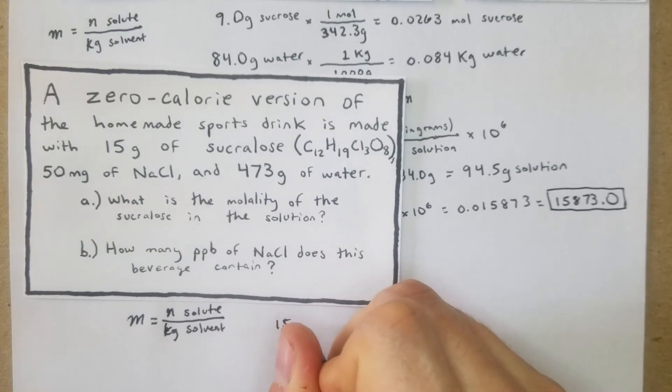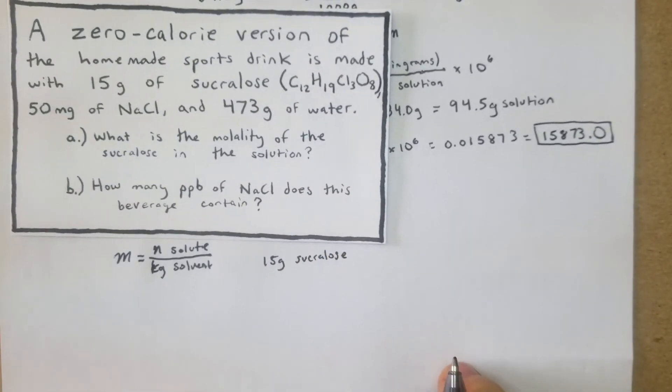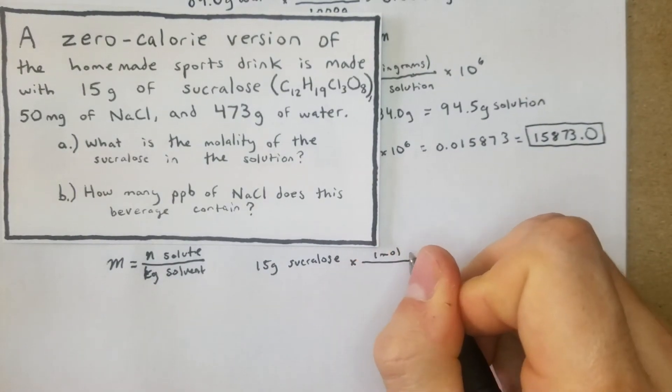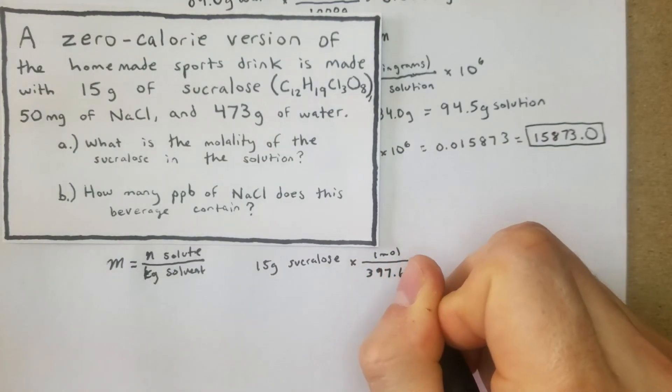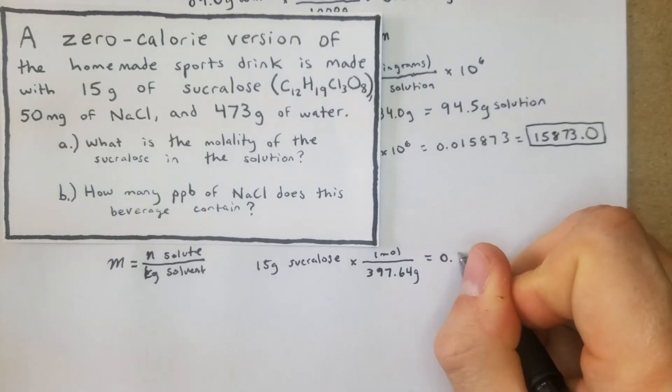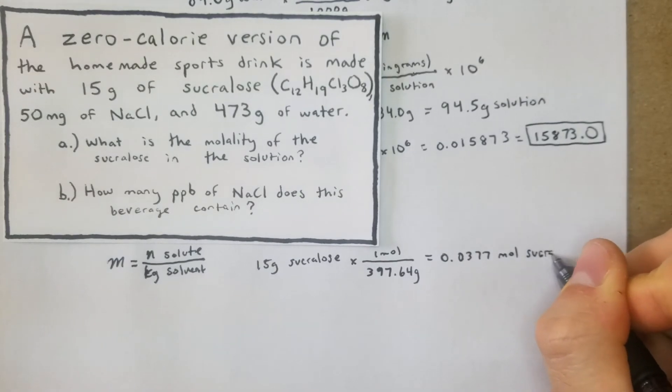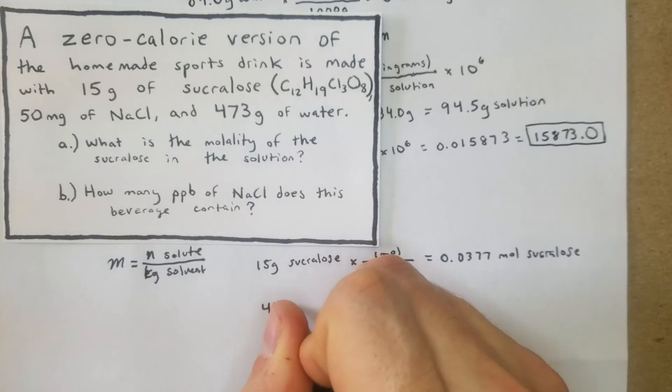We start with our formula: n of solute over kg of solvent. We have 15 grams of sucralose times one mole divided by its molar mass, which is 397.64 grams. From that we get 0.0377 moles of sucralose.